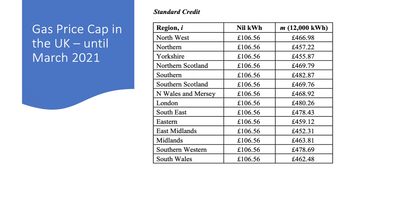This table shows the current caps set by the regulatory body Ofgem, which limits how much a gas or electricity supplier can charge for each unit of gas and electricity for standard variable tariffs and standard credit tariffs. They also have different caps for prepayment meters. This doesn't mean there's a cap on how much you can pay in total for your energy — if you've got a bigger family with bigger energy needs, you're going to pay more. But it caps the amount charged per unit — in the case of standard credit, it's £106.56 per kilowatt hour.